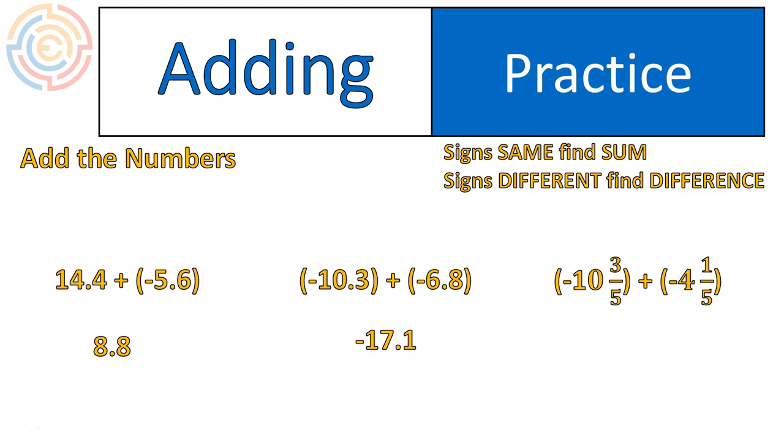Let's look at that example. Negative 10 and 3 fifths plus negative 4 and one fifth. It's a negative and a negative. So I'm going to just add the numbers together and my final answer will be negative. So we should add 10 plus 4 is 14. Three fifths plus one fifth gives us four fifths. So our final answer is 14 and four fifths, and it will be negative. Negative plus a negative gives us a negative. Make sure to remember that when you're looking at integers and rational numbers.